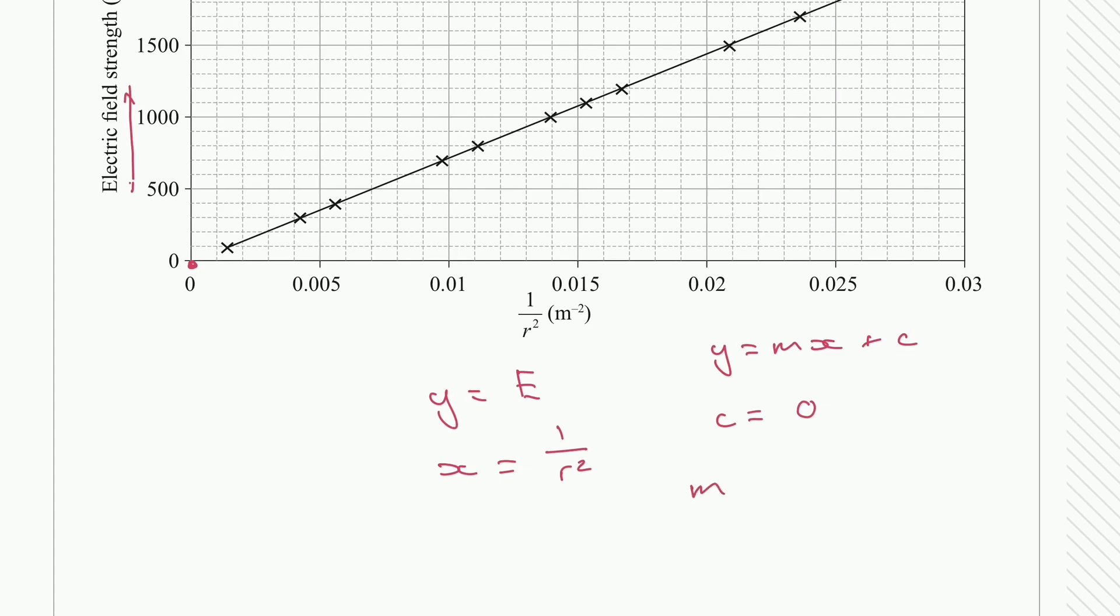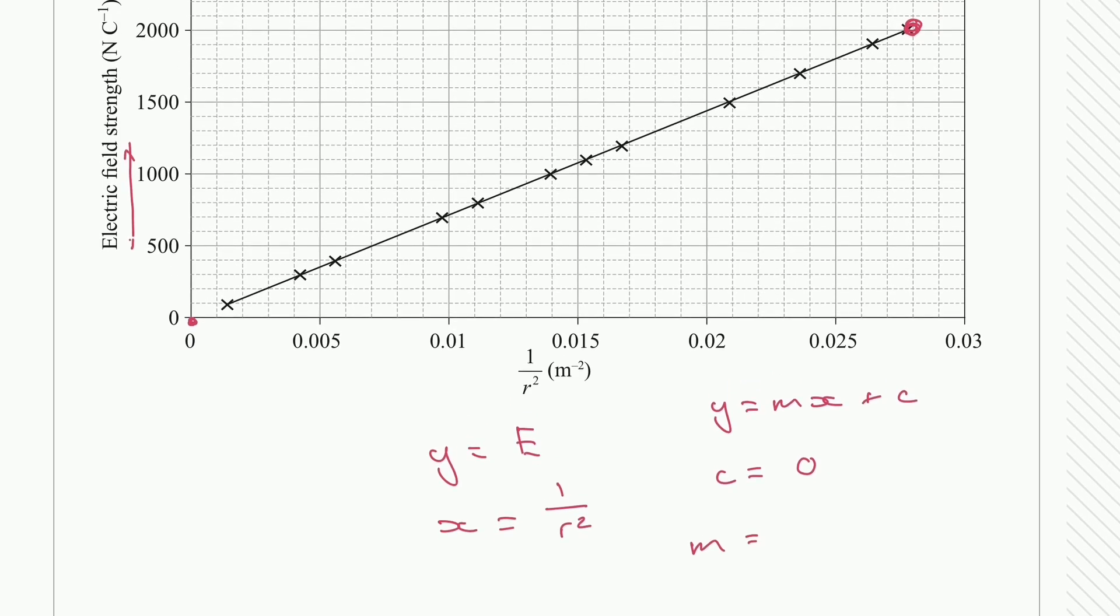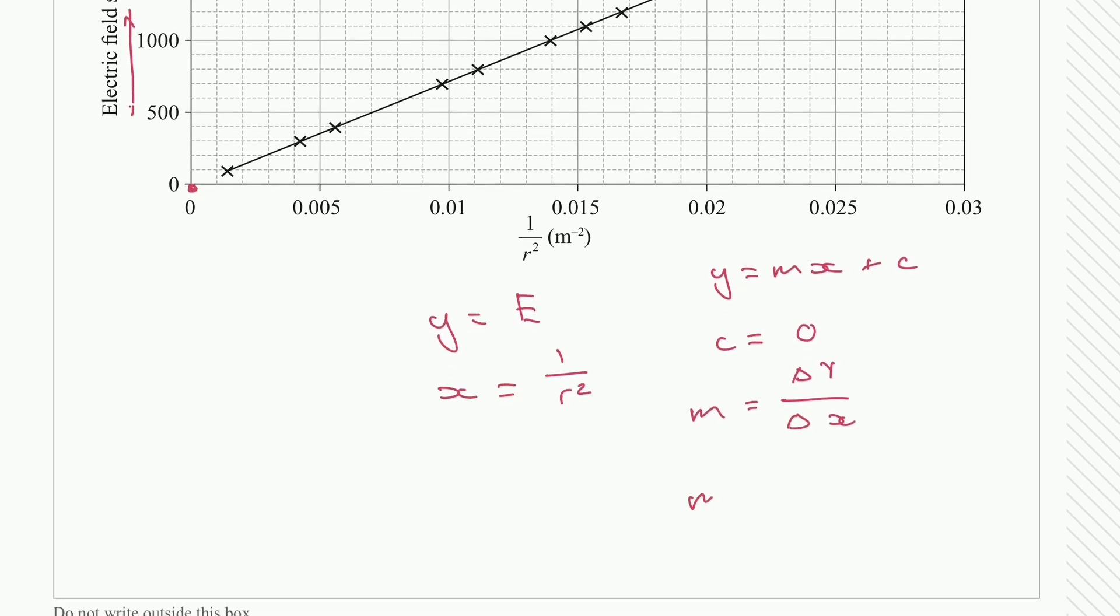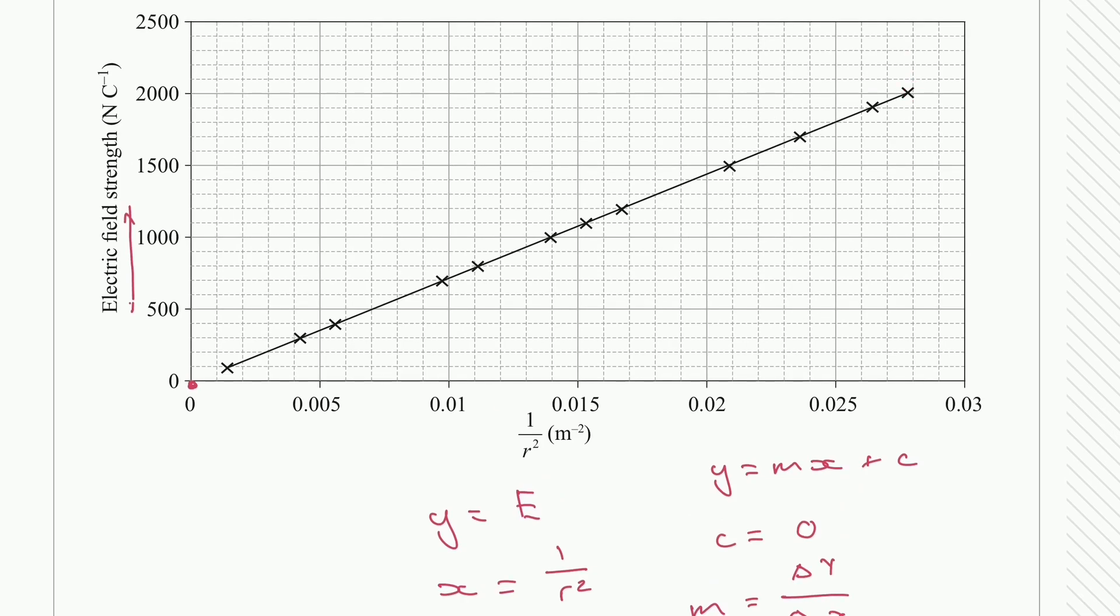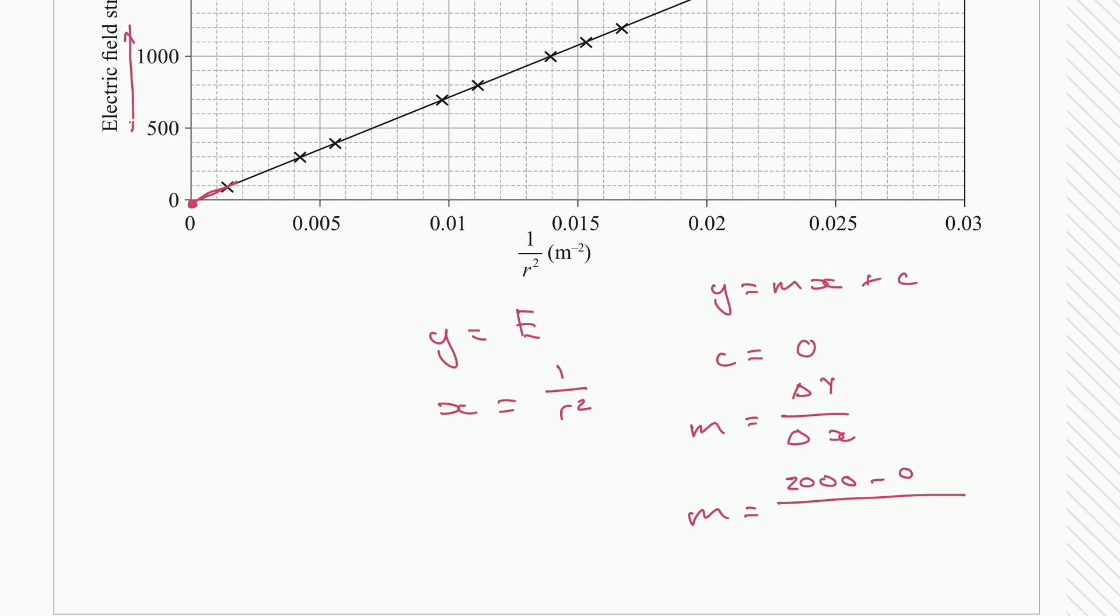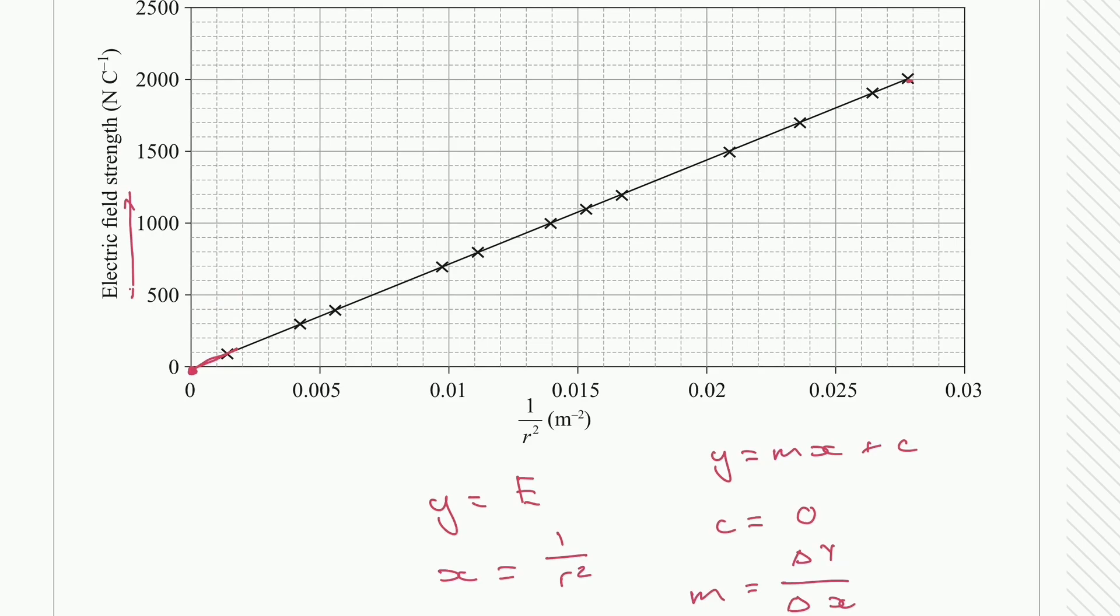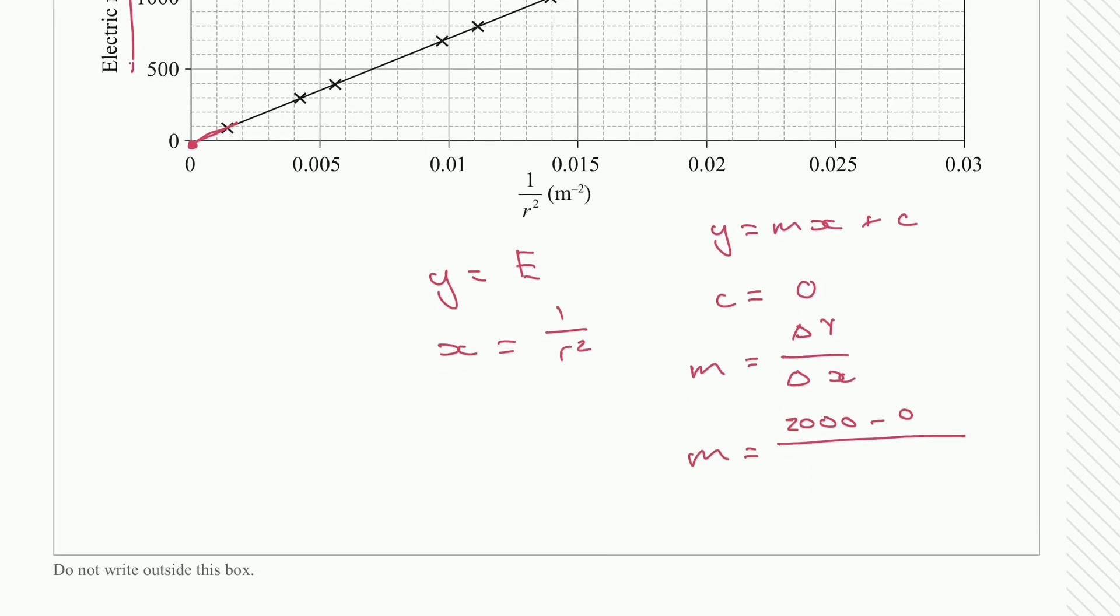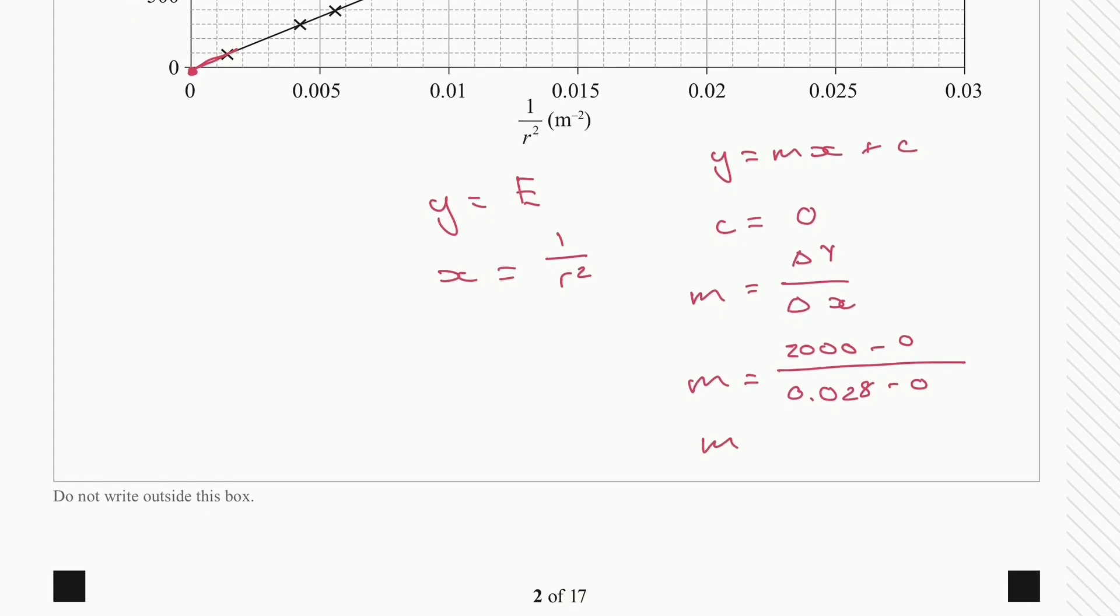Now m on the other hand is our gradient. So for our gradient we are just going to do the standard change in y over the change in x. And let's just pick simple values. This point up here does line up on our graph. So we would be looking at a y of 2,000 minus our 0 here. At that y point of 2,000 it is an x value of 0.0258 minus 0 again. And we end up getting our gradient equal to 72,000.